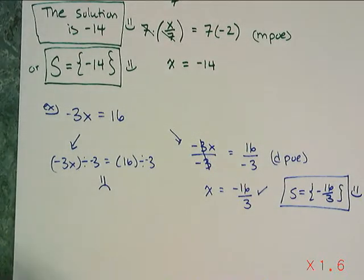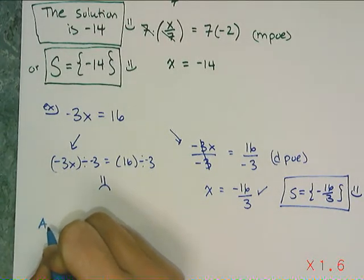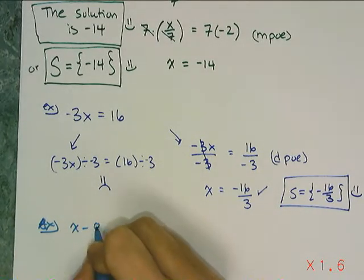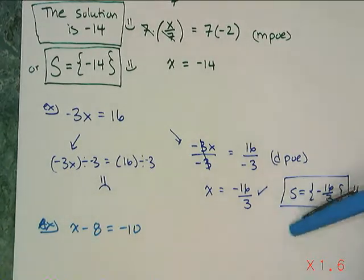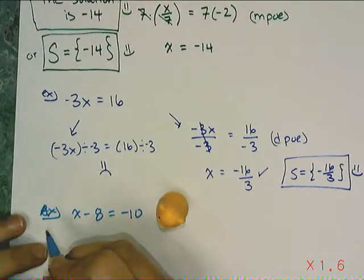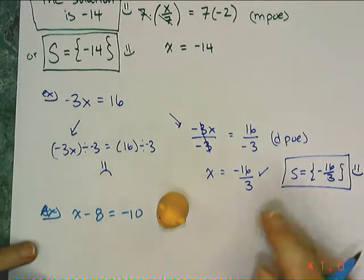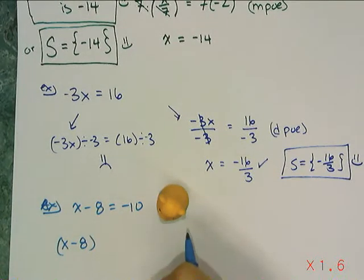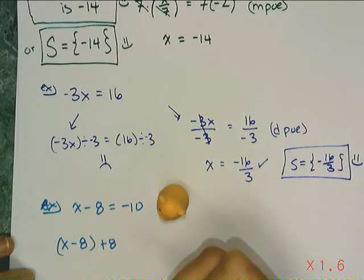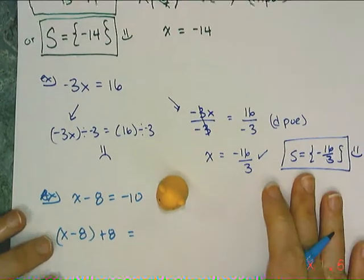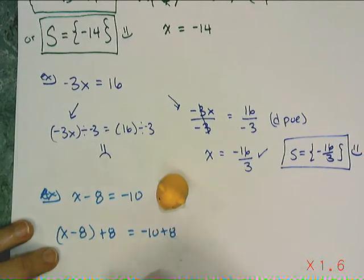Now let's look at addition and subtraction. Something like x minus eight equals negative ten — super basic, looks like a one-hamster problem. But it depends on how you write it. If you write it the way you're supposed to, you take this side, see it has a minus eight, so you want to add eight. You have to add eight to the entire side, which means you need to put it in parentheses, because the addition property of equality tells me I have to treat each side equally.